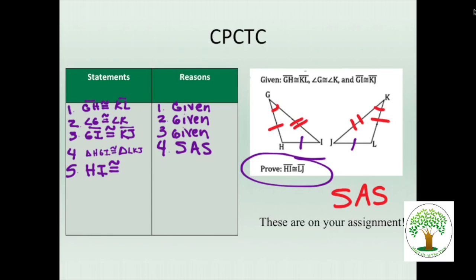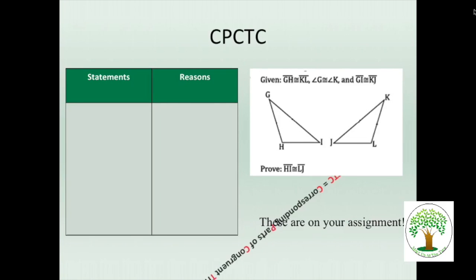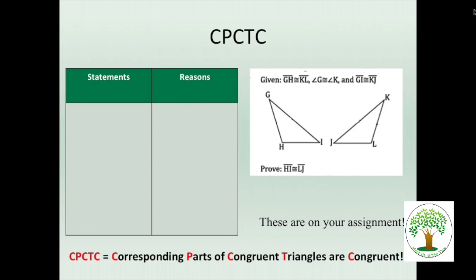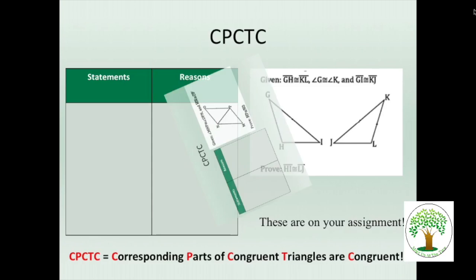So we can now state that as number five, that HI is congruent to LJ. And write, and there's the CPCTC. Very good. Or if you want to, you can write the whole thing out, corresponding parts of congruent triangles are congruent. Not going to happen. So let's just reiterate that the CPCTC means corresponding parts of congruent triangles are congruent. So once you get them congruent, you can use their corresponding parts.